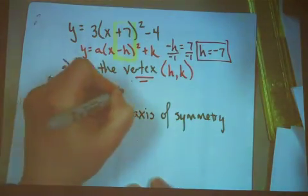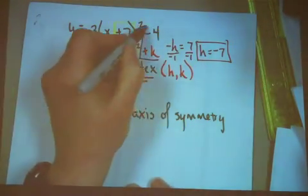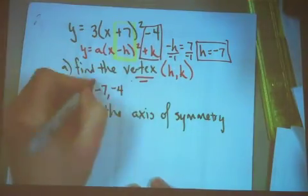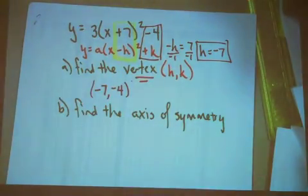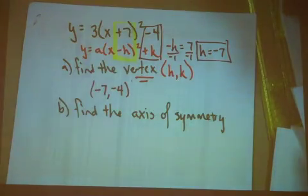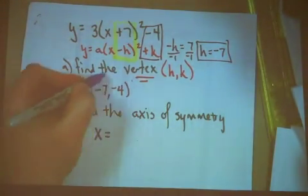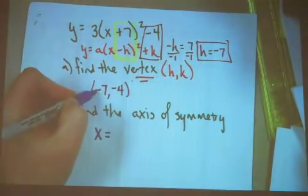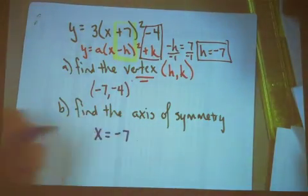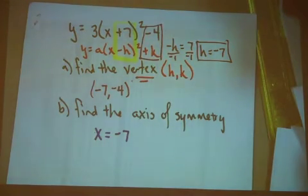So negative 7 is the h value, and the negative 4 is where the k is. So the coordinate pair negative 7, negative 4 is our vertex. Again, remember that the axis of symmetry is always equivalent to the h value. So x equals negative 7 will be the equation for our vertical line axis of symmetry.